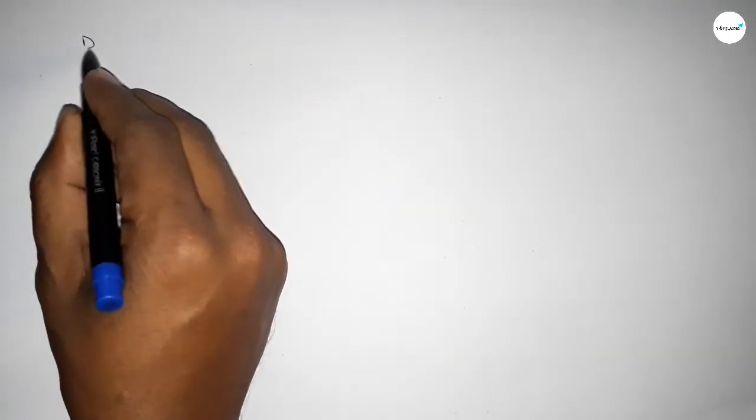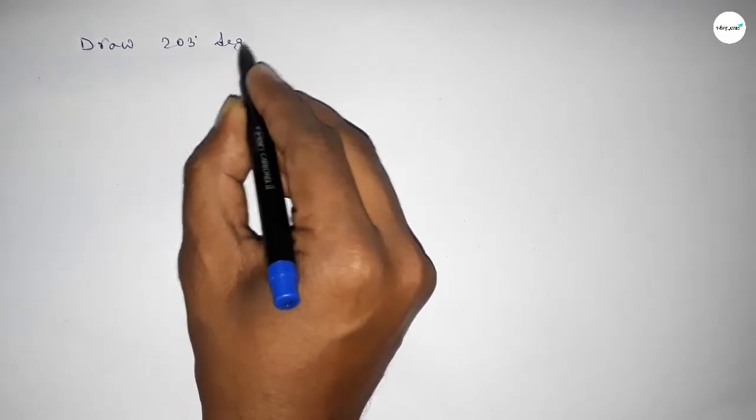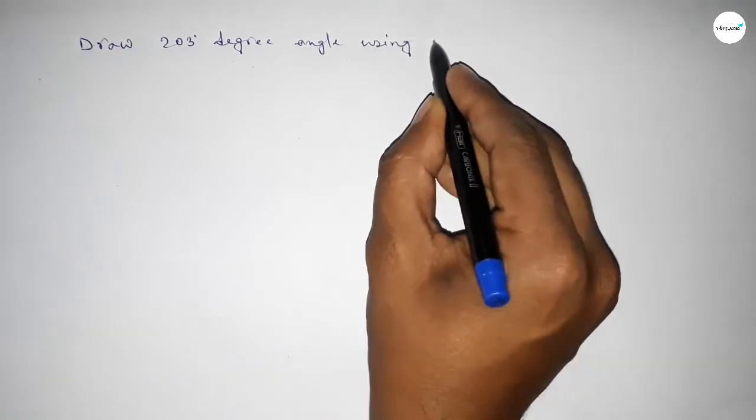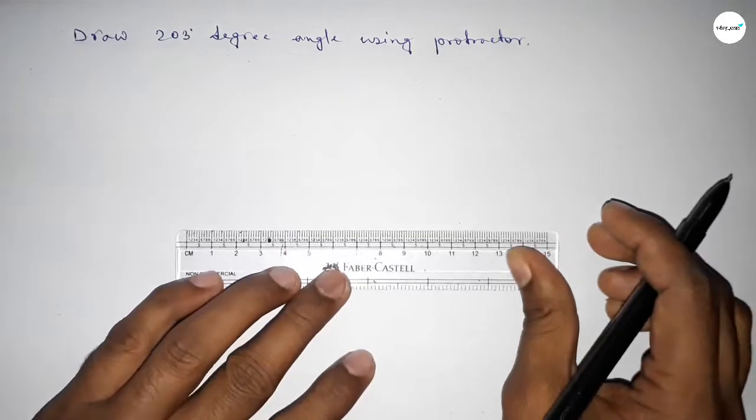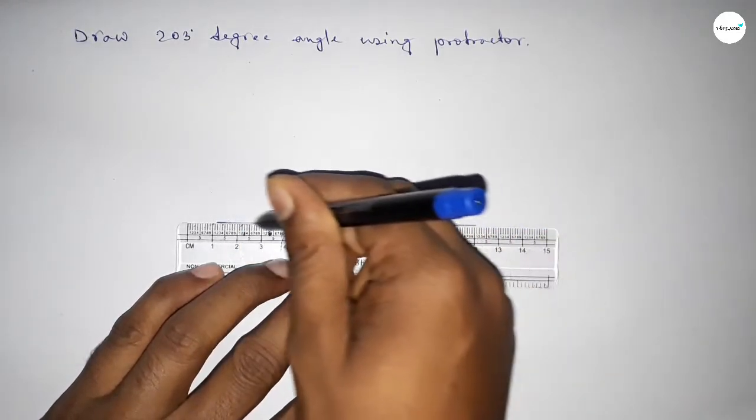Hi everyone, welcome to SSR Classes. Today in this video we have to draw a 203 degree angle by using a protractor. So let's start the video. First of all, we have to draw here a straight line of any length.